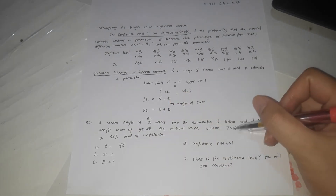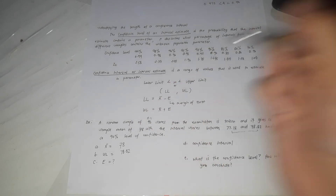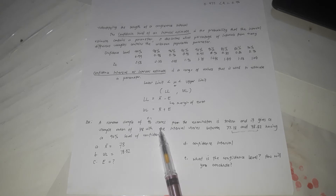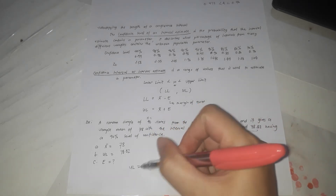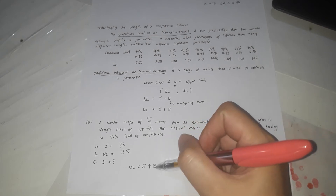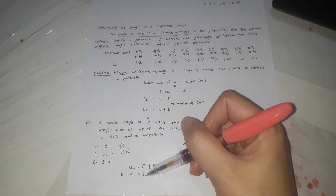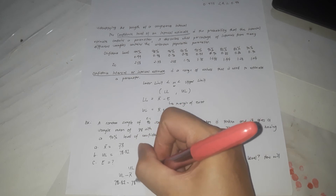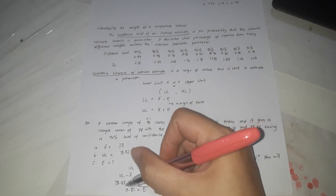For the upper limit: the interval shows that the upper limit is 78.82 and the lower limit is 77.18. Since the margin of error is not directly given, we use the formula: UL equals X-bar plus E, which means E equals UL minus X-bar. So the margin of error E equals 78.82 minus 78, which gives us 0.82. The margin of error is 0.82.